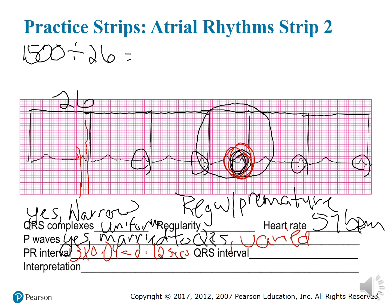Next, we'll figure out our QRS interval. Going from the start to the J point — that's 2 boxes. So 2 times 0.04 gives us 0.08 seconds.